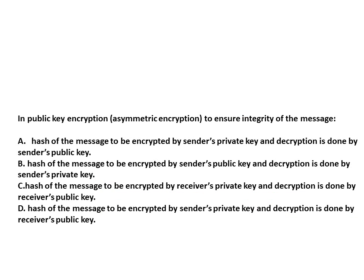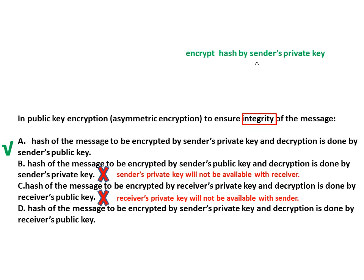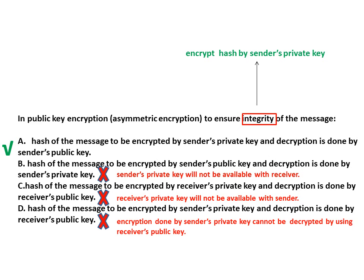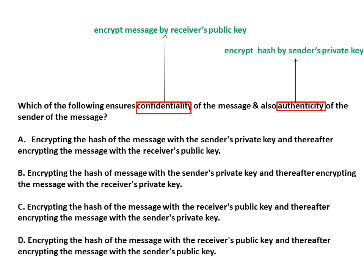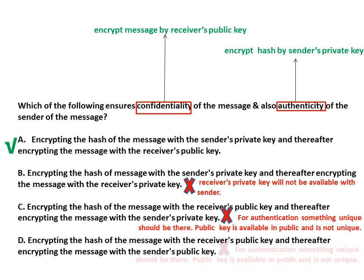One more question: the objective is integrity of the message. For integrity, the answer is sender's private key, so our answer should be A. Options B, C, and D will not be correct for the reasons already discussed. In a question where the objective is to ensure confidentiality as well as authenticity, for confidentiality use the receiver's public key and for authenticity the answer should be sender's private key. So your answer will be A, and options B, C, and D will not be correct.